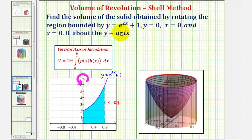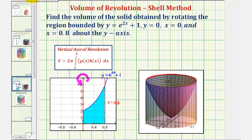Because we have a function of x and a vertical axis of rotation, we'll be using the shell method to find the volume, where the volume is equal to two pi times the integral of p of x times h of x, integrated with respect to x from a to b. Here p of x is the distance from the axis of rotation, and h of x is the height. To help us set up this integral, we'll sketch a representative rectangle, and when sketching with the shell method, the rectangle is always parallel to the axis of rotation.